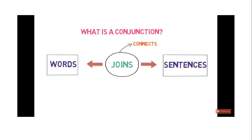In today's video lecture we are going to cover conjunctions. First of all, what is a conjunction? A conjunction is a word that connects — that joins two words or two sentences. It also joins two phrases and two clauses.